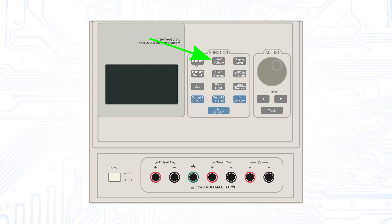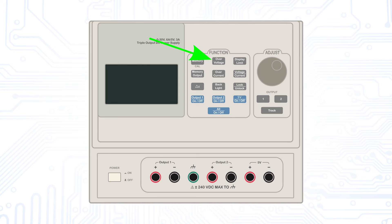Our power supply also offers the possibility of overvoltage protection. It is set in the same way as the overcurrent protection, except that the overvoltage button is used and the display shows the letters OVP for overvoltage protection accordingly.